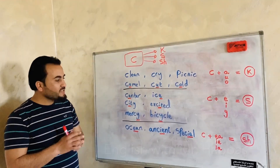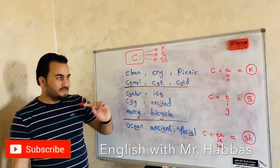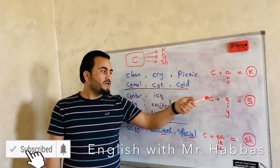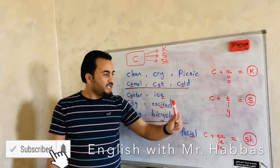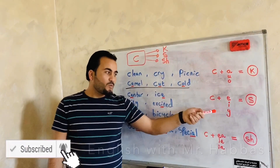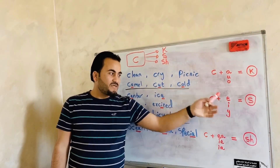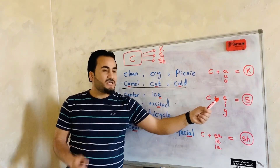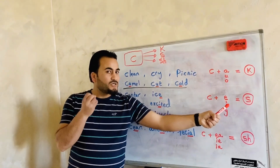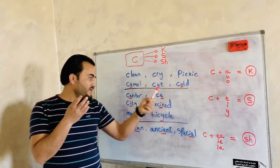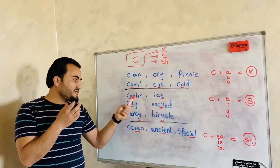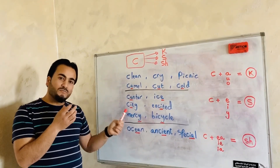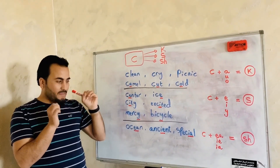So here again, C plus E, I, or Y, the sound of C is going to be S. Center. City. Mercy. Very nice.